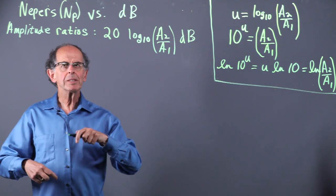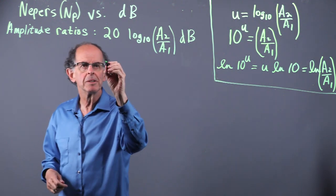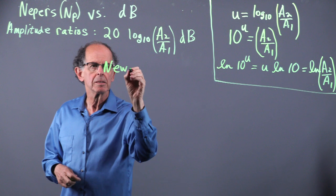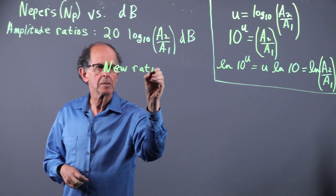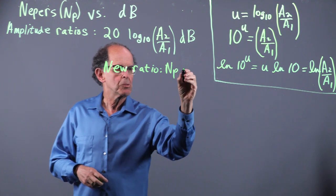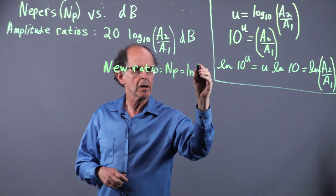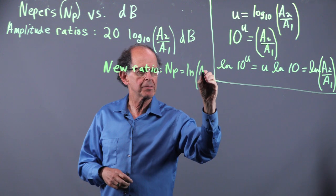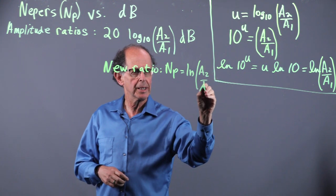Now, we're going to do a new ratio. And that's called NIPRs, NP, which is natural log of the ratio of A2 to A1.